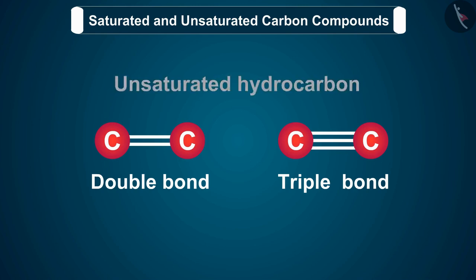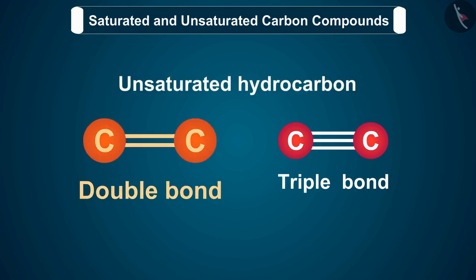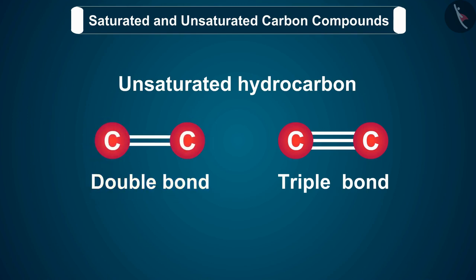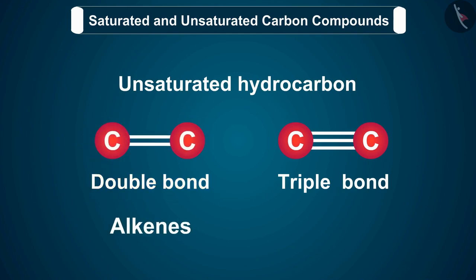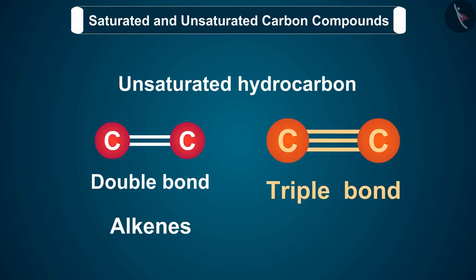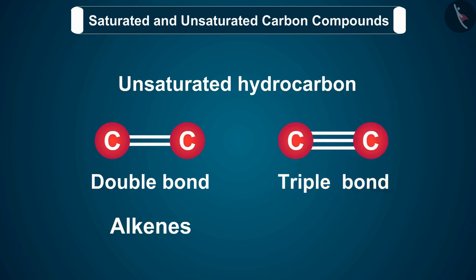The unsaturated hydrocarbons are obtained mostly from petroleum by the process called cracking. Unsaturated hydrocarbons are of two types: first, double-bonded hydrocarbons, also called alkenes; and second, triple-bonded hydrocarbons, also called alkynes.